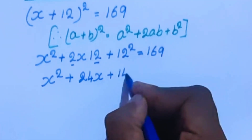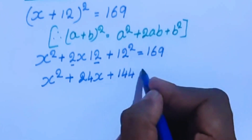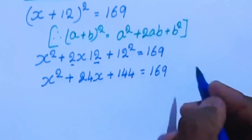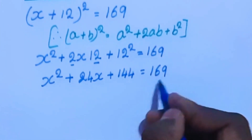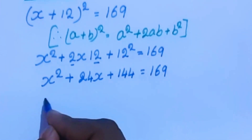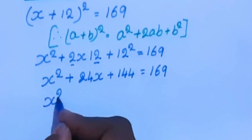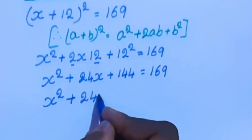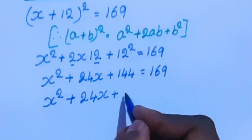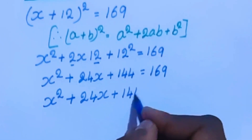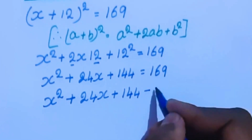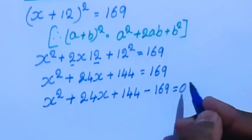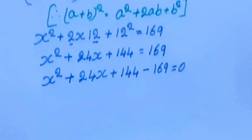Now x square plus 24x plus 144 equal to 169. Moving 169 to the left hand side, we get x square plus 24x plus 144 minus 169 equal to 0.